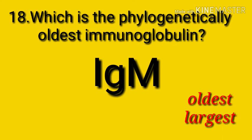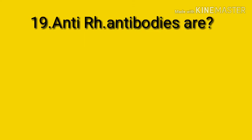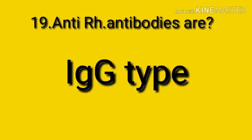Question number nineteen: anti-RH antibodies are IgG type. IgG is the anti-RH antibody. RH immunoglobulin is a preparation of immunoglobulin given to a D-negative woman during pregnancy and following delivery of a D-positive fetus. It can prevent anti-D hemolytic disease of the newborn.